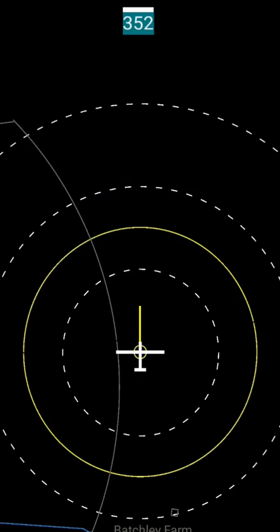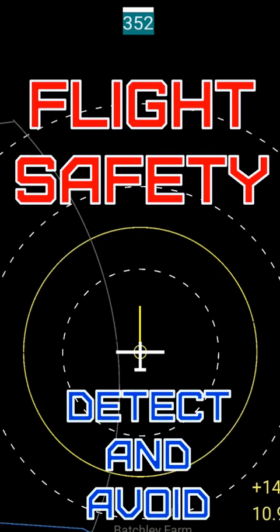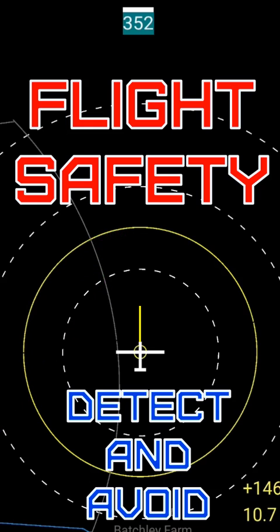Hi and welcome to my channel. In the flight safety video on mid-air collision, we looked at the importance of a good lookout, but I also mentioned an app that I use to detect and avoid other traffic. This video demos that app, and although it's aimed at all light aviation flying up to around 100 knots, it's especially useful for slower traffic.